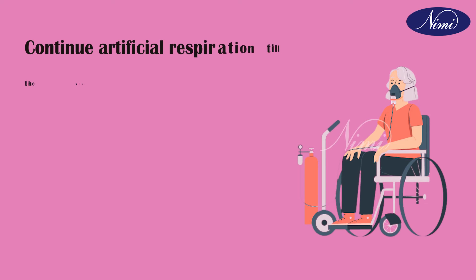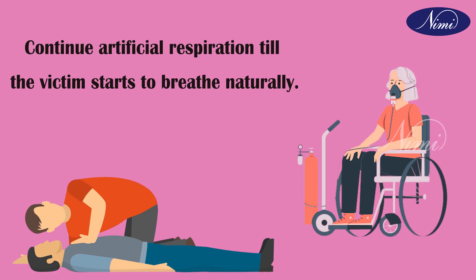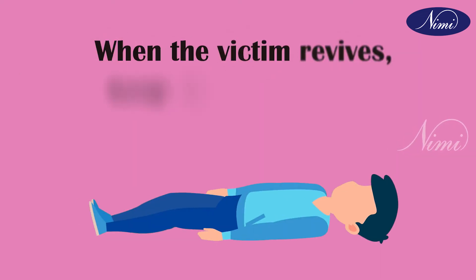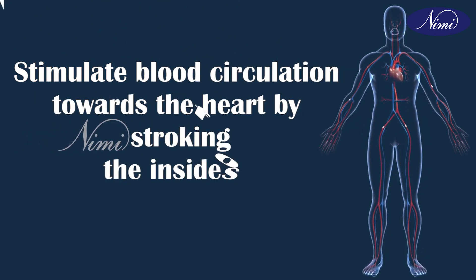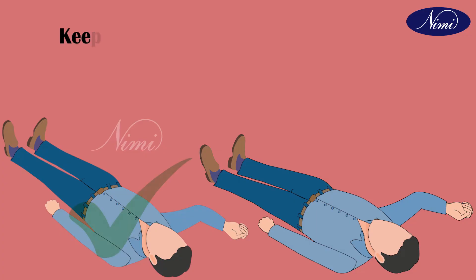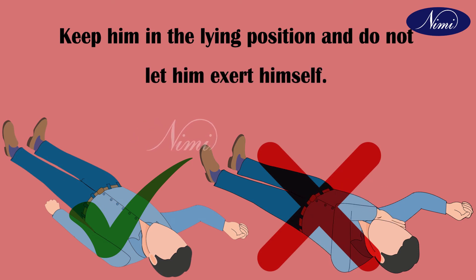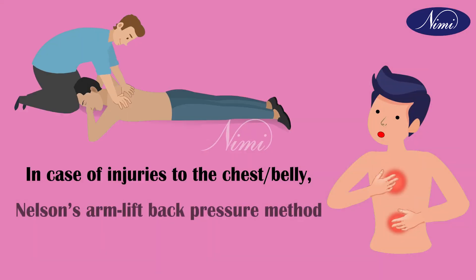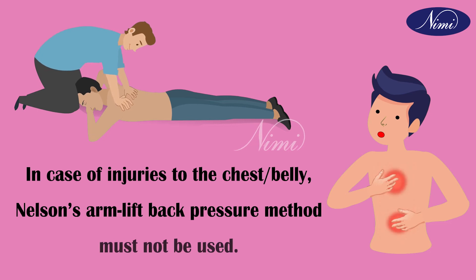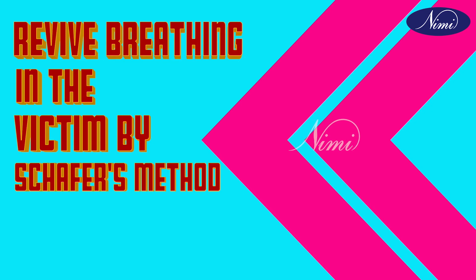Continue the artificial respiration until the victim starts to breathe naturally. When the victim revives, keep them warm and stimulate blood circulation towards the heart by stroking the insides of the arms and legs. Keep the victim in the lying position and do not let them exert themselves. In case of injuries to the chest or belly, Nelson's arm lift back pressure method must not be used.